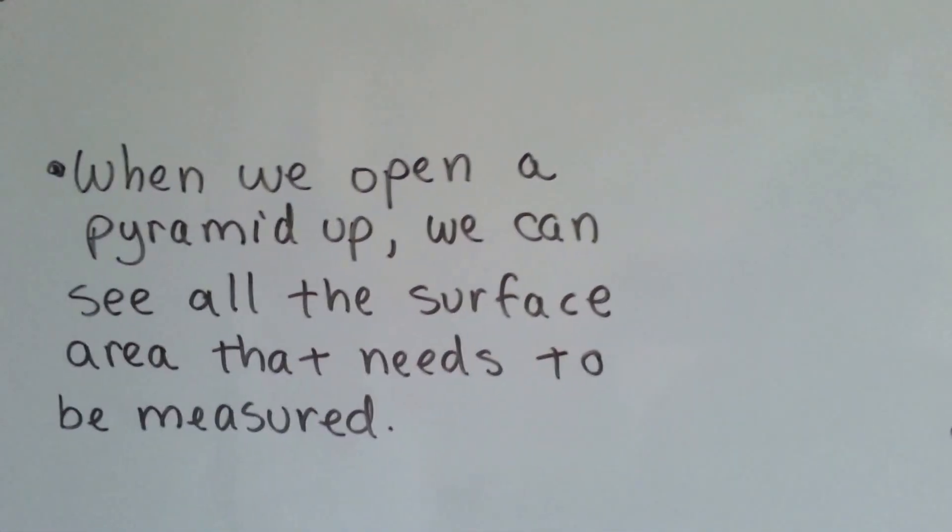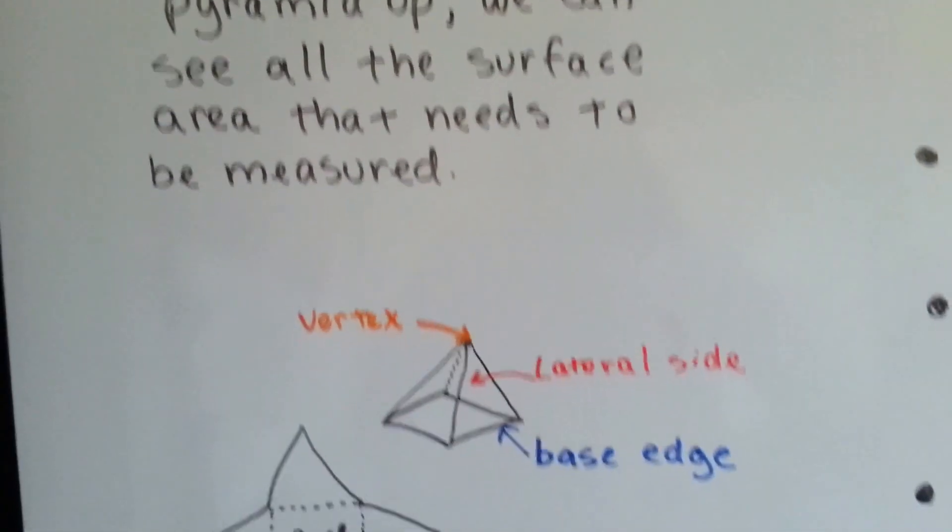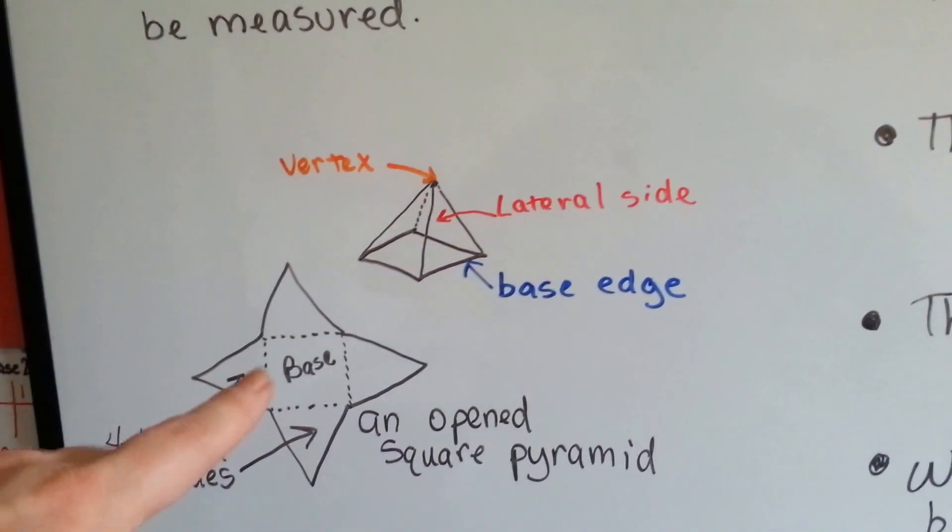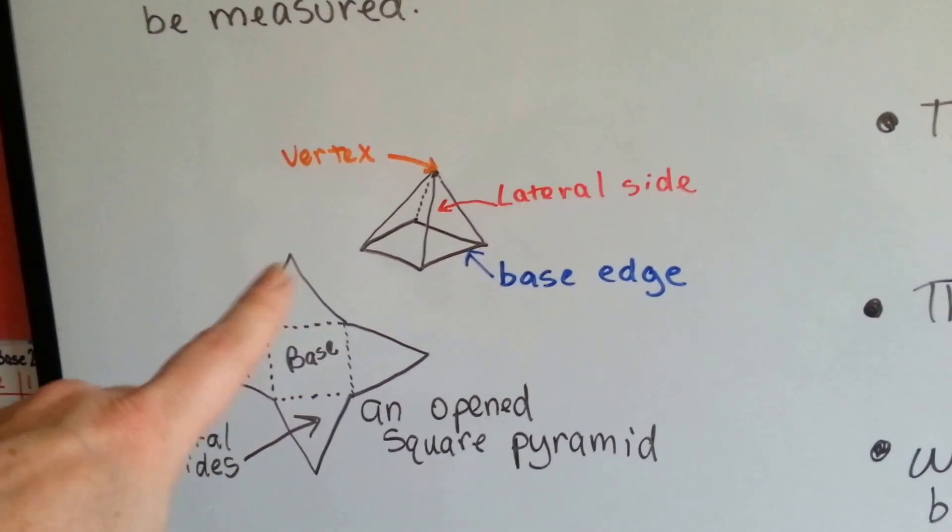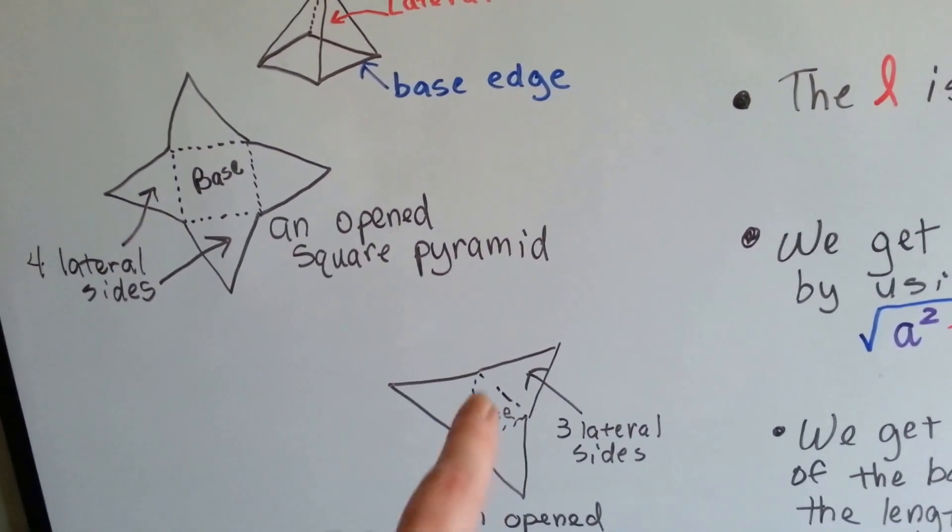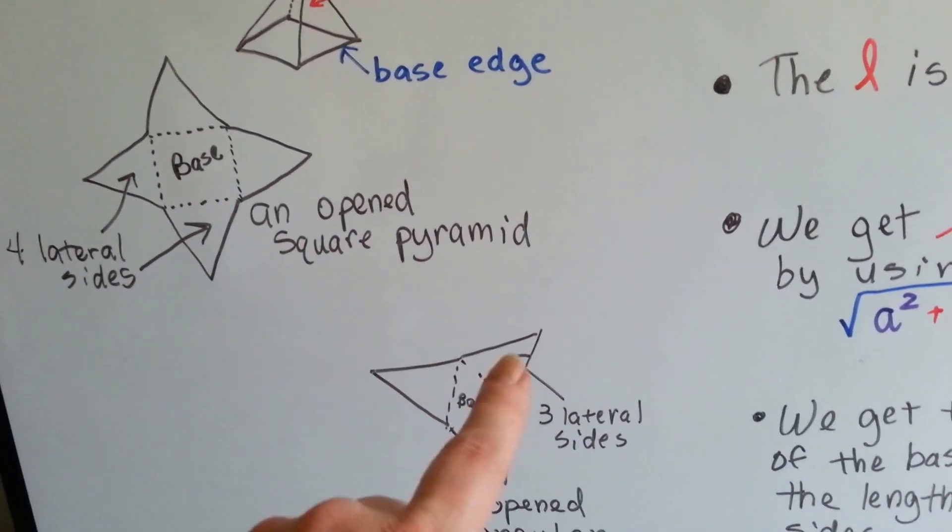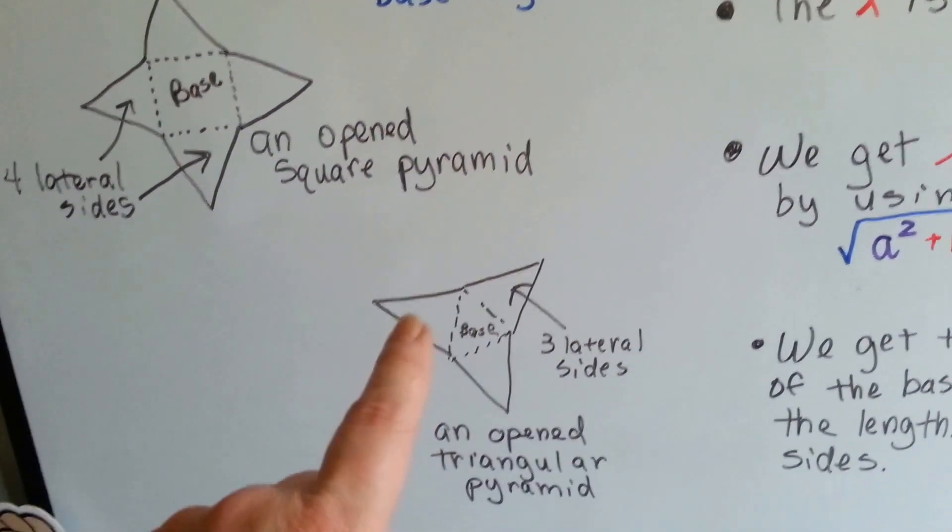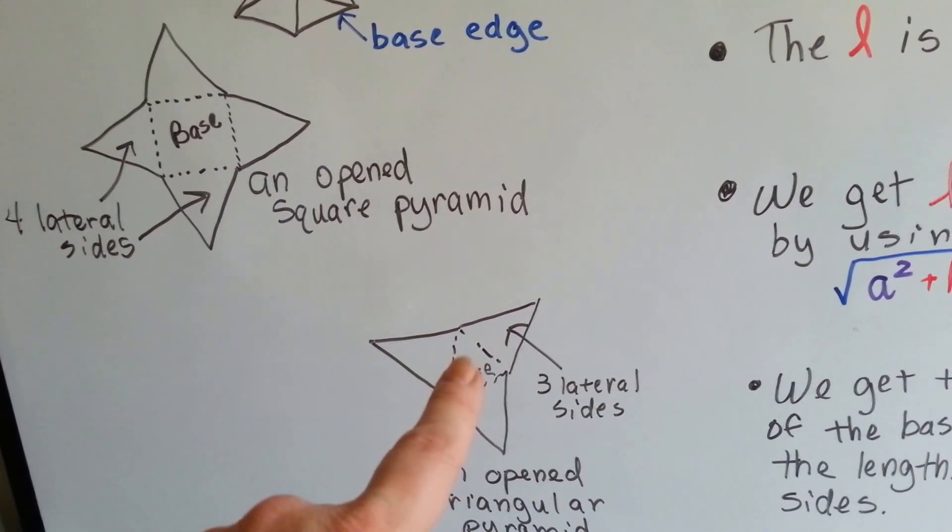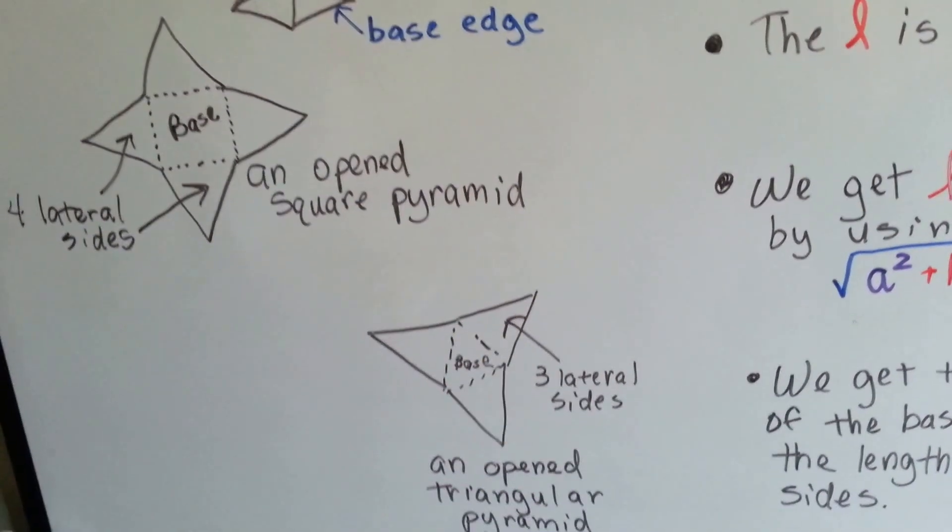When we open the pyramid up, we can see all the surface areas that need to be measured. Here's the pyramid, a square one, and if we opened it up, we could see the square base and the four sides. Well, we have a triangle pyramid, so it's got a triangle base and three lateral sides, and this is what it looks like opened up, and that's the entire surface area that we need to find. So we need to find a triangle base and we need to find three triangles.